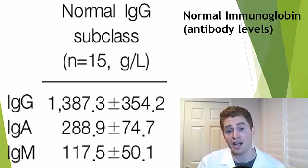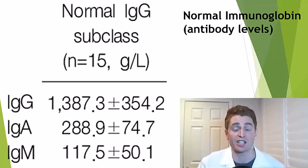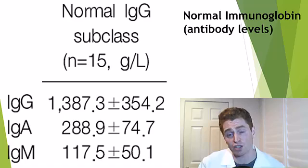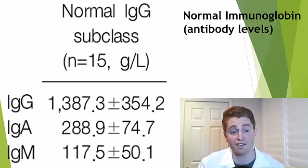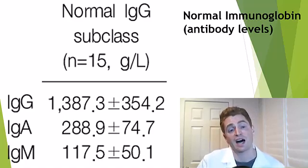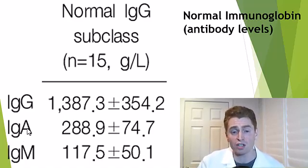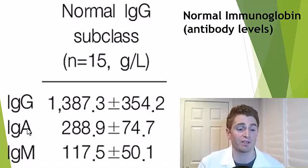IgA are the immunoglobins in the secretions, like in the saliva and in the gastrointestinal tract, thought to be important in preventing respiratory and gastrointestinal infections. Now, the most important is IgG, the long-term antibodies in the blood. They're most associated with the risk of infections.